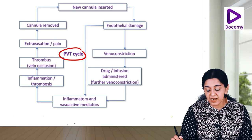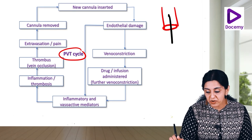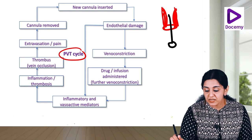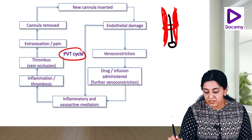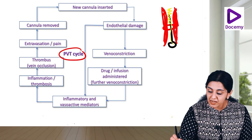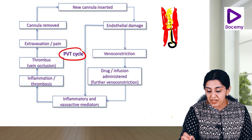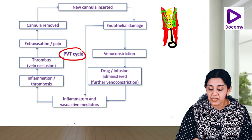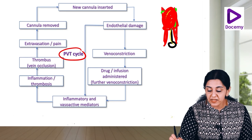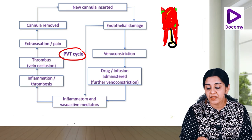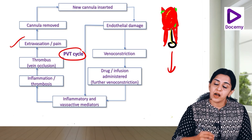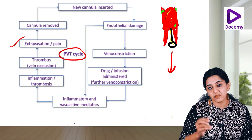The peripheral venous thrombophlebitis cycle: a new cannula is inserted causing endothelial damage, leading to venous constriction. Drug or infusion is administered causing further vessel constriction. Inflammatory and vasoactive mediators activate, leading to inflammation and thrombosis. Thrombus formation causes venous occlusion, extravasation, pain, and the cannula is removed. A new cannula is inserted elsewhere and the cycle continues.